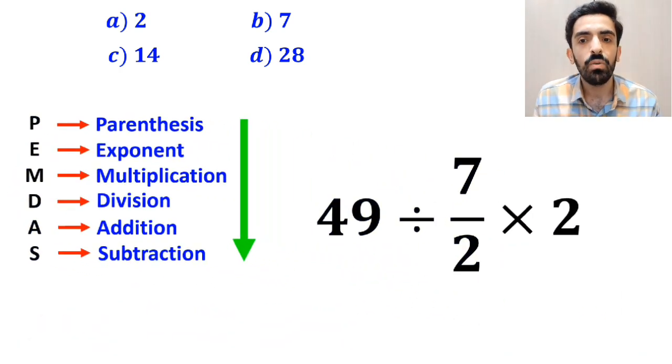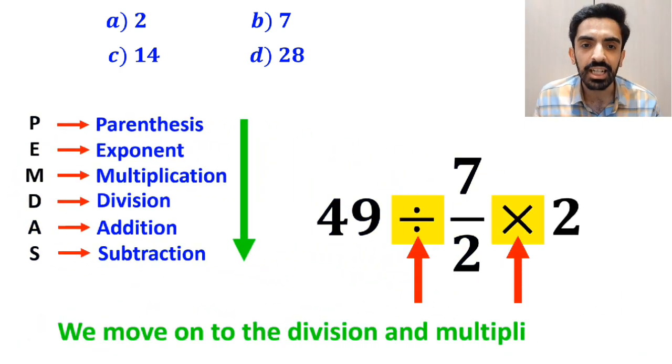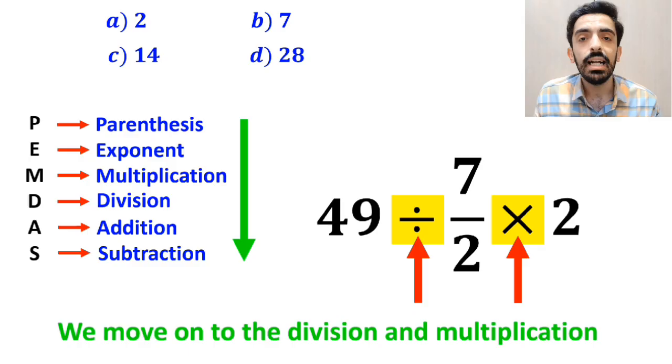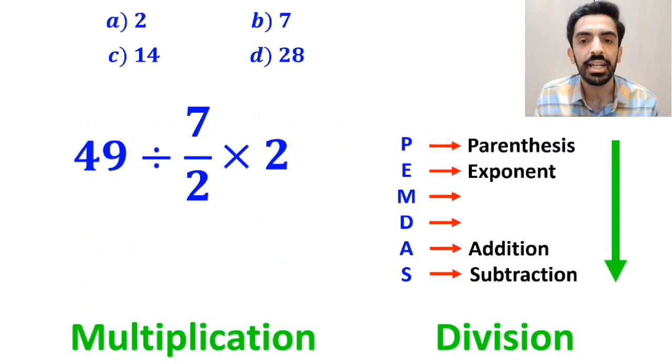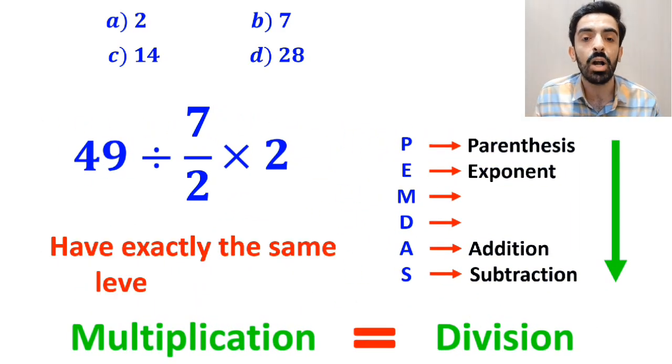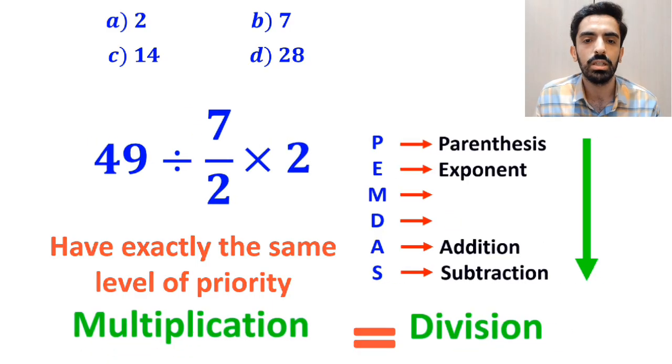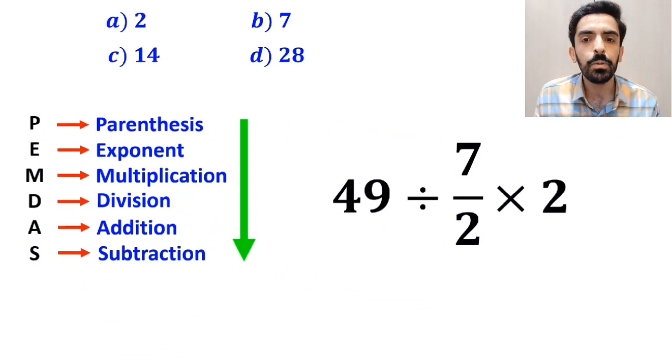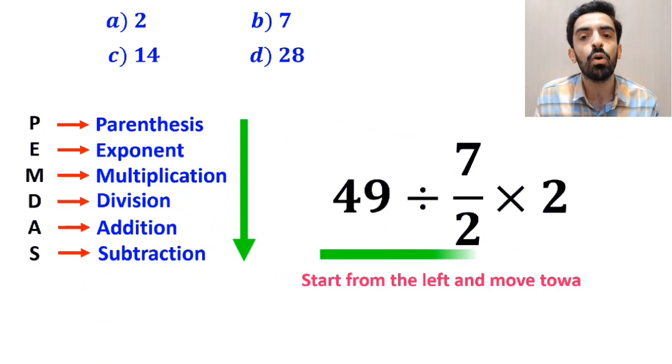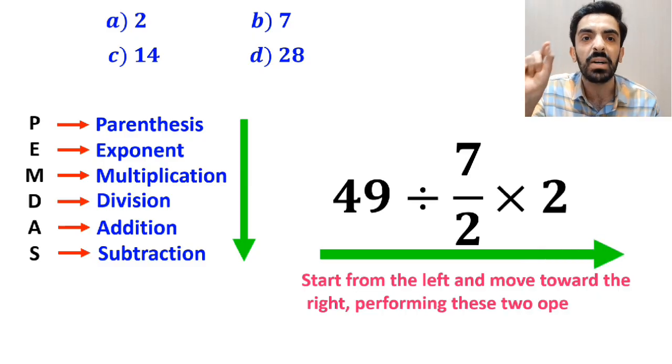In the next step, we need to move on to the division and multiplication. However, it's very important to note that multiplication and division have exactly the same level of priority in the PEMDAS rule. In this situation, the best approach is to start from the left and move toward the right, performing these two operations in order.